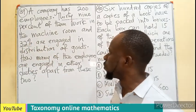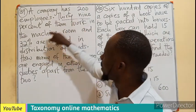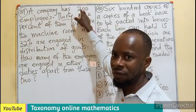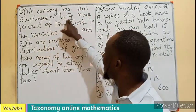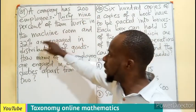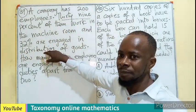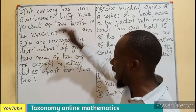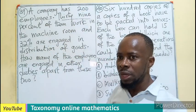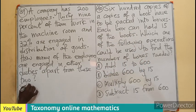To find the remaining, we can find the percentage of those working in other places, then apply that percentage to 200. Or we can find 39 percent of 200 to know the people in the machine room, find 32 percent of 200 to know how many are in distribution, then subtract the sum of those two from 200 to get the number in other duties.